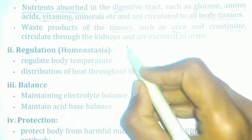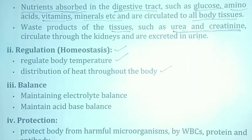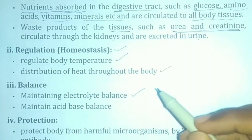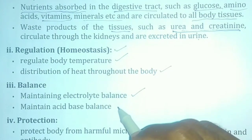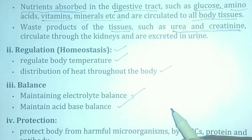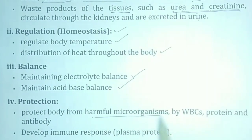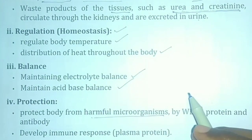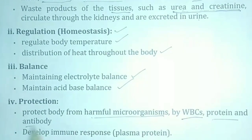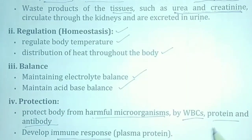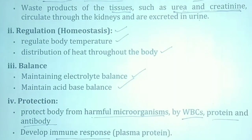Blood helps regulate the body's temperature. It maintains electrolyte balance and minerals balance, as well as acid-base balance to maintain the slightly alkaline nature of blood. Blood also provides protection against microorganisms through white blood cells, which carry out the immune response. These are the functions of the blood.